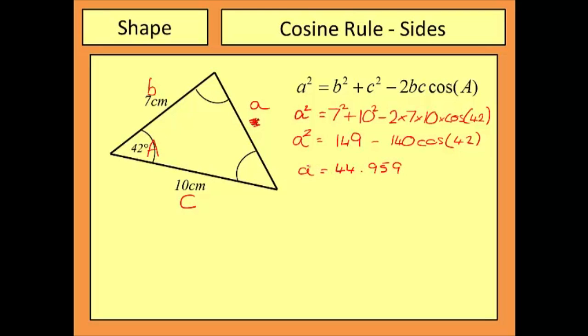Now when I put all this into my calculator the value I'm actually going to get is 44.959. Now remember this is not A. This is A squared. So very similar to when we do Pythagoras what we actually need to do is to take a square root of this and this will give me the final value for A which is 6.7cm.